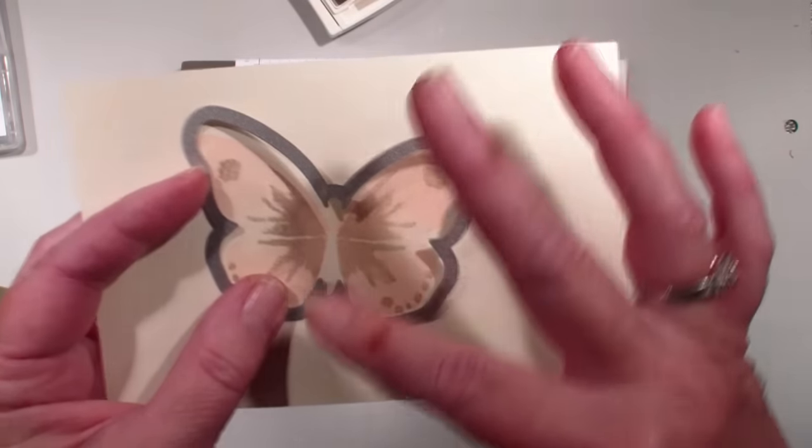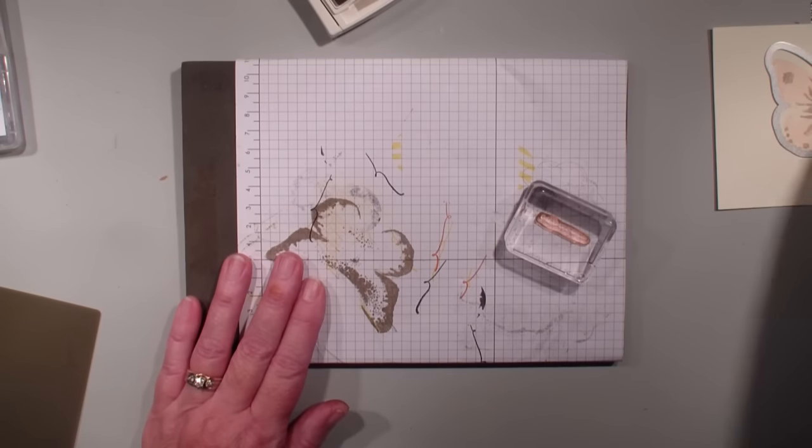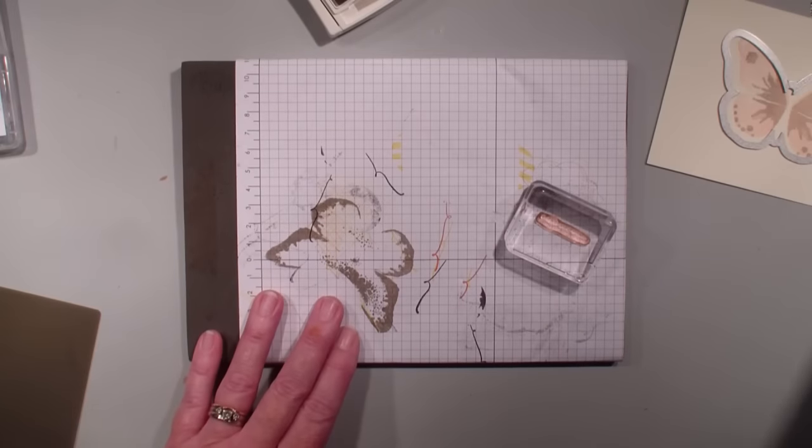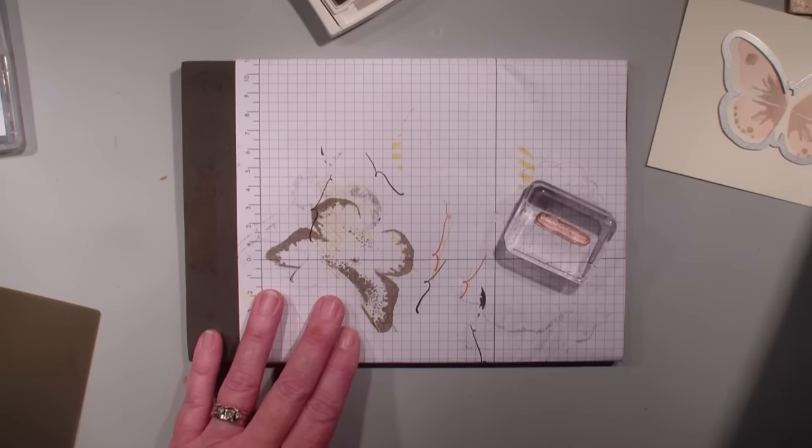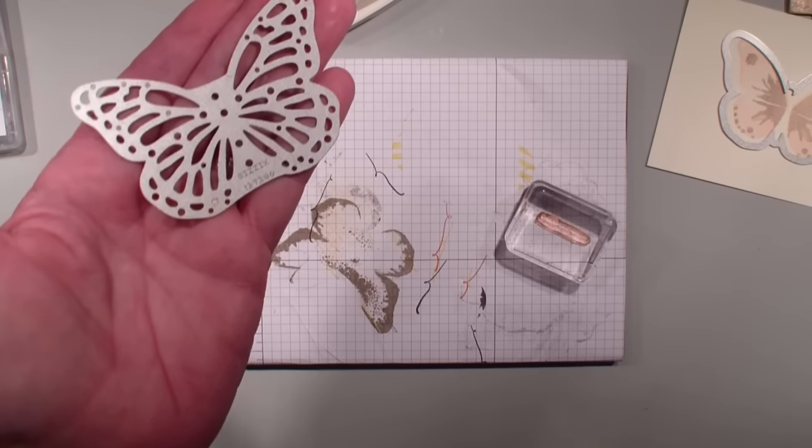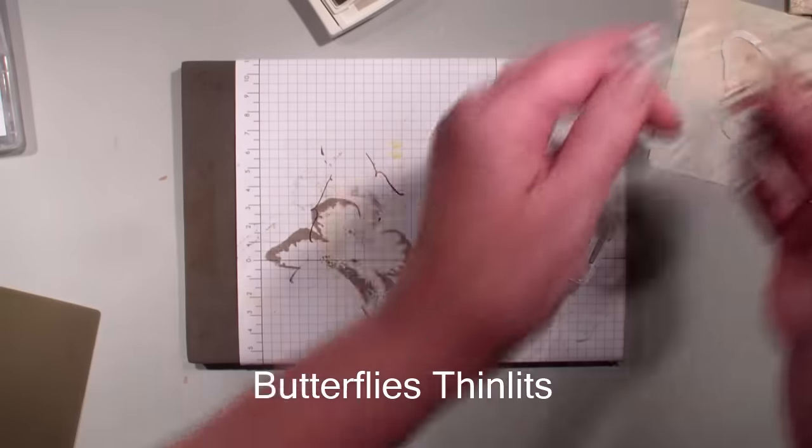If you stamp it first it sometimes doesn't always work out well. And so then what I did after I ran it through the Big Shot cut that out. Then I used from the butterfly thinlits that we had before and cut that image out. So now I have a two tone look.